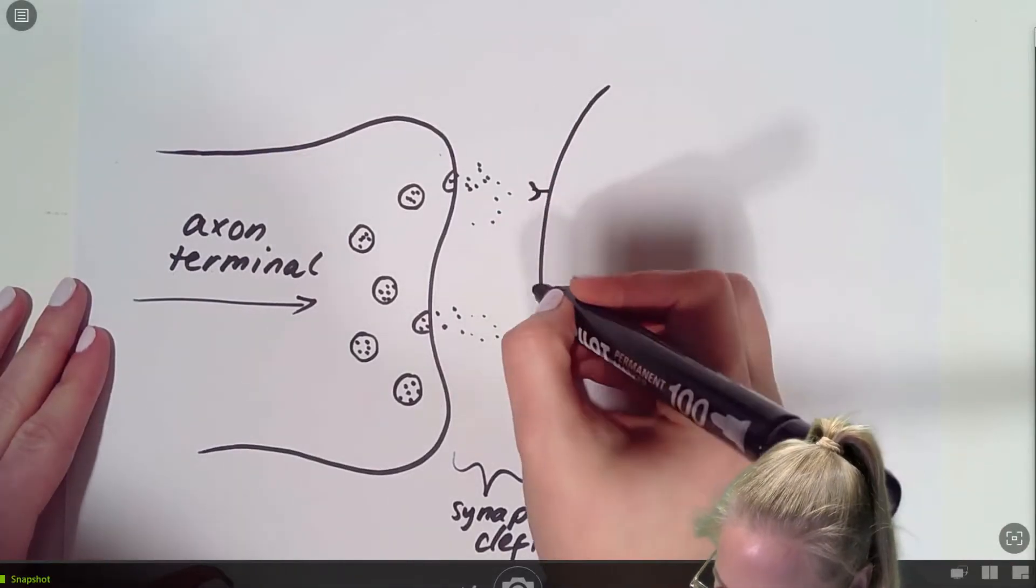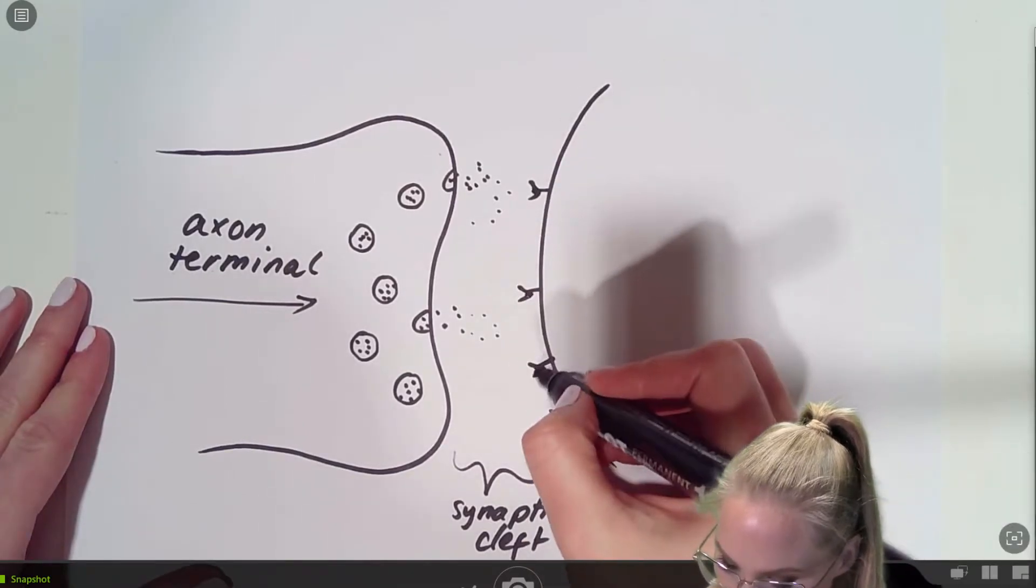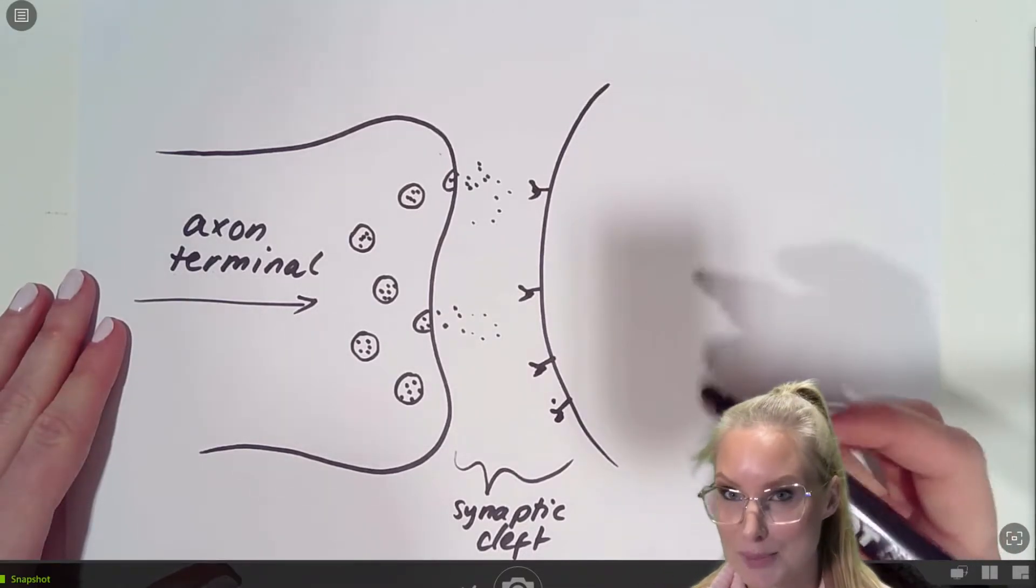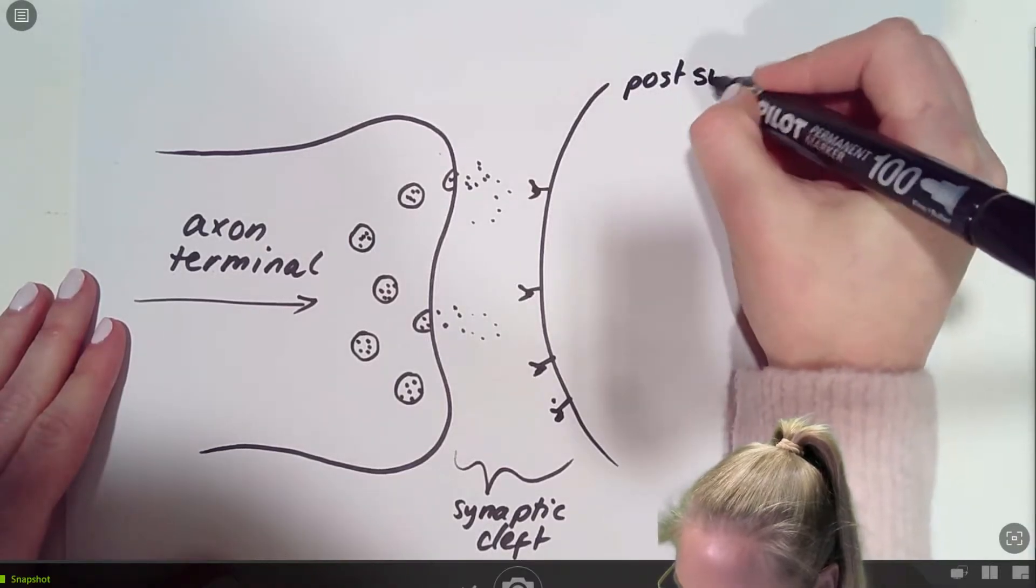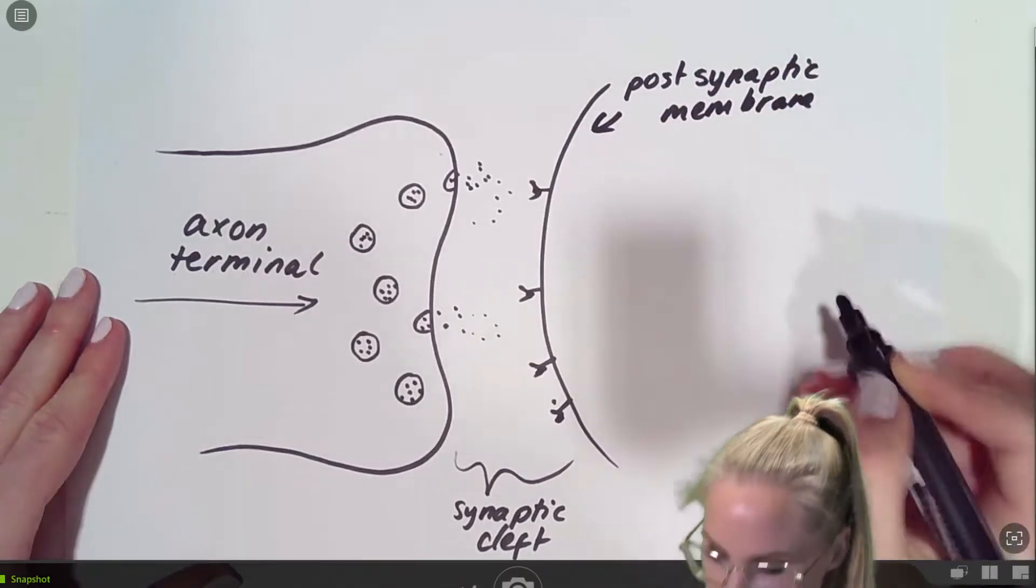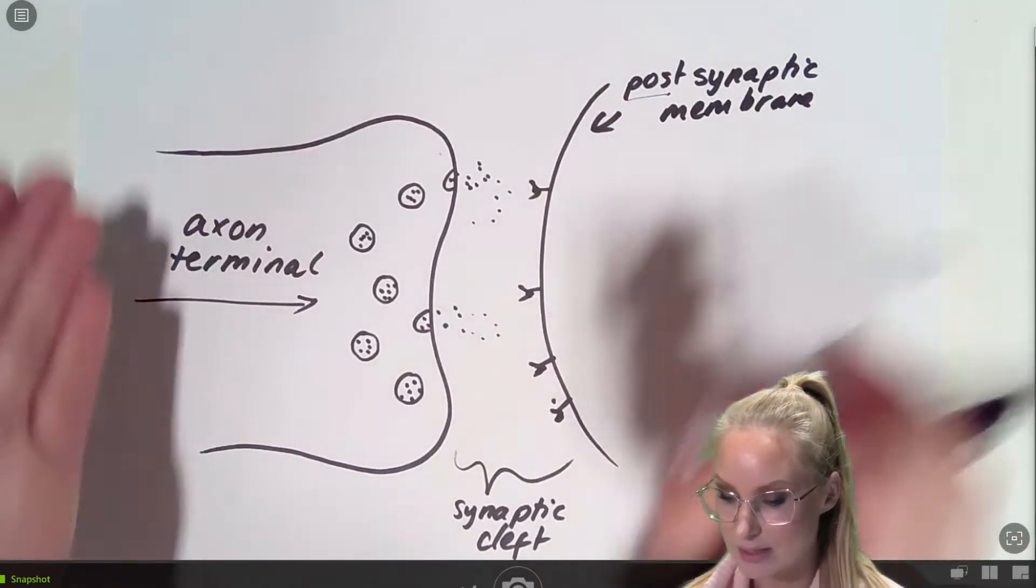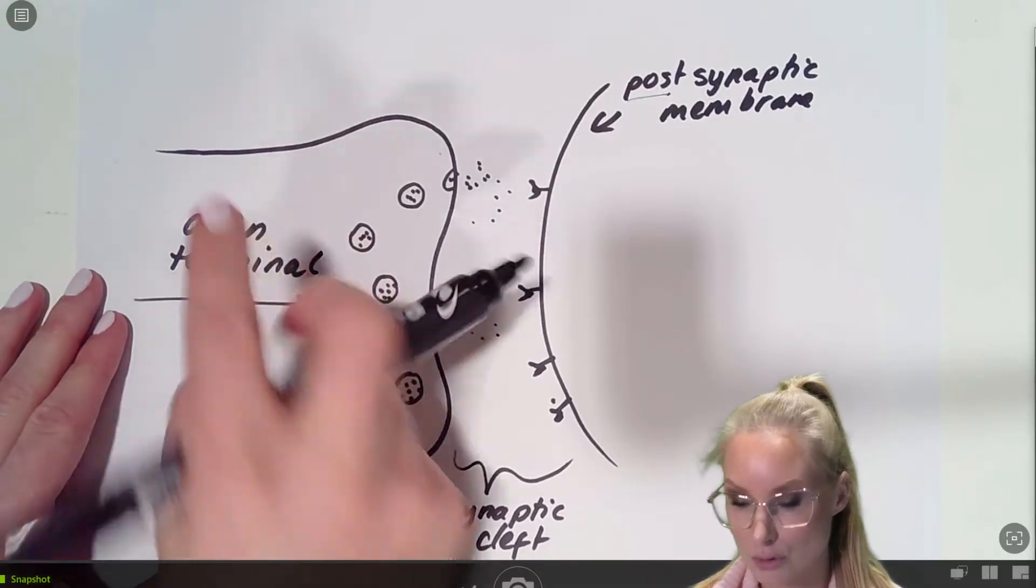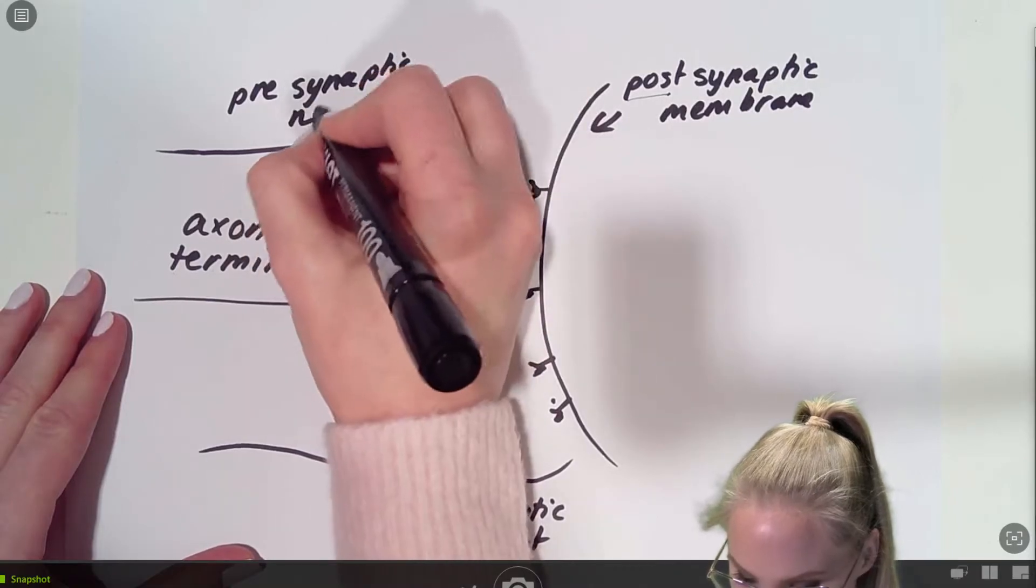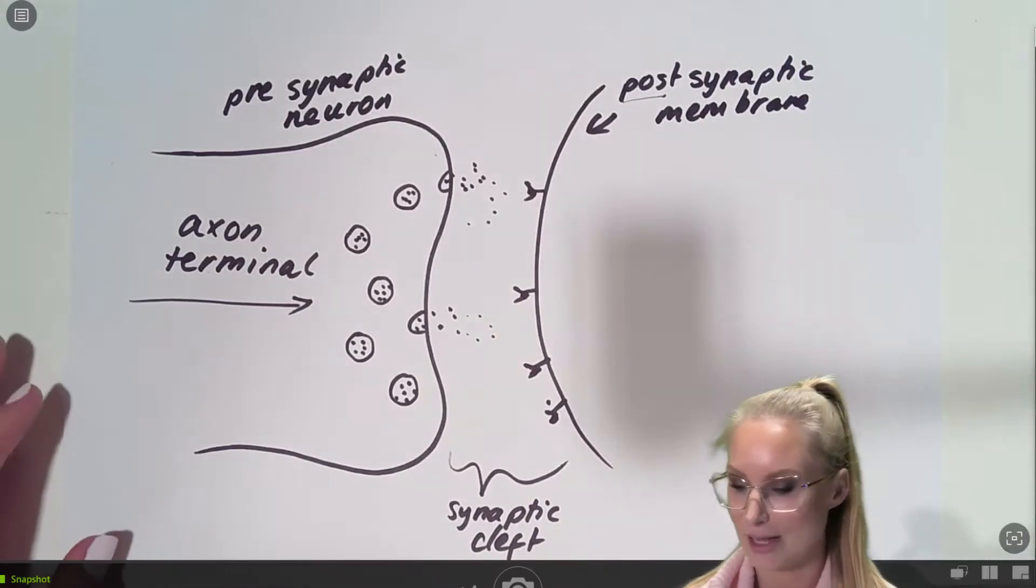Now what they then do is they bind to receptors. And these receptors are located on the target cell. We call this specific part of the target cell the postsynaptic membrane. And the reason why it has this term is because it means it's after the synapse. So this is the synapse. This is actually the presynaptic neuron. We have the synaptic cleft. And then we have the postsynaptic membrane. Great.